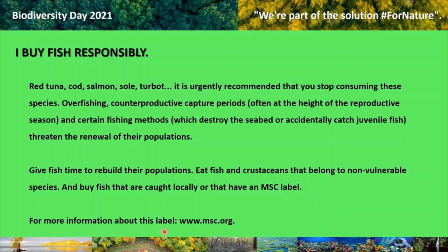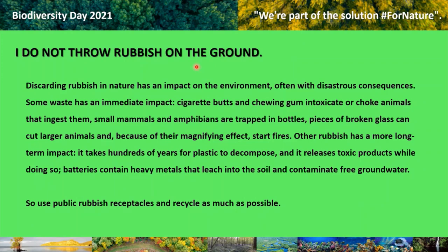For more information about the MSC label, visit www.msc.org. Do not throw rubbish on the ground. Discarding rubbish in nature has an impact on the environment, often with disastrous consequences. Cigarette butts and chewing gum intoxicate or choke animals that ingest them. Small mammals and amphibians are trapped in bottles. Pieces of broken glass can cut larger animals and, because of their magnifying effect, start fires. It takes hundreds of years for plastic to decompose, releasing toxic products while doing so. So use public rubbish receptacles and recycle as much as possible.